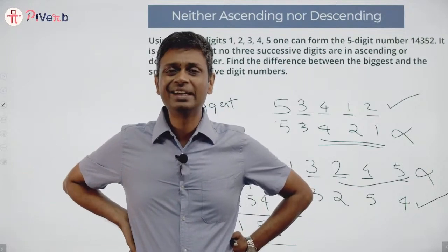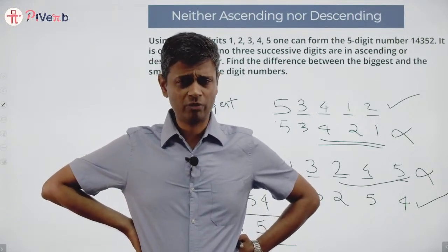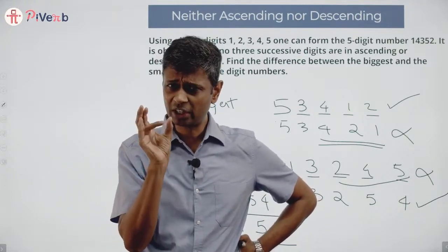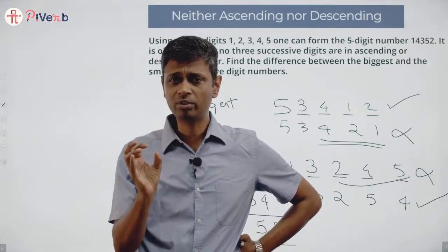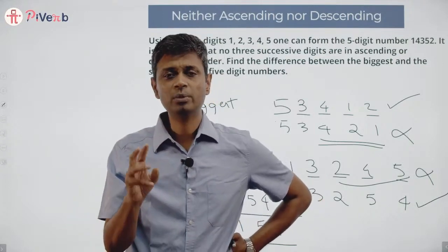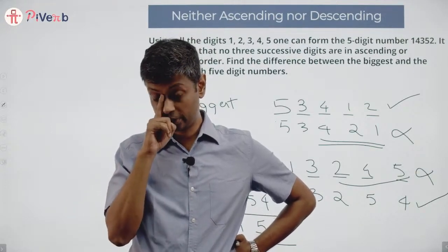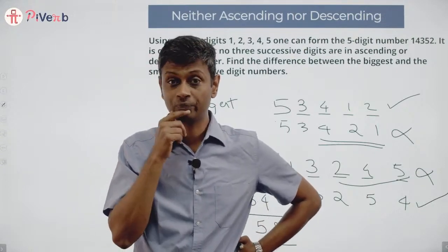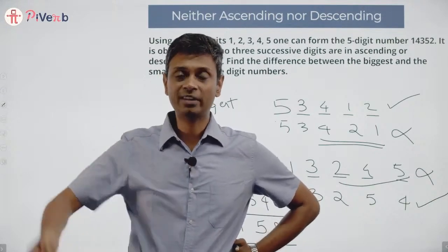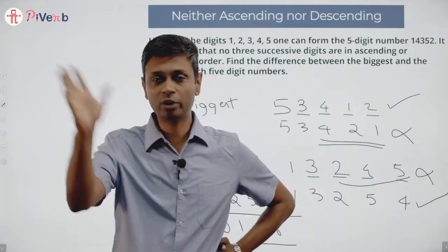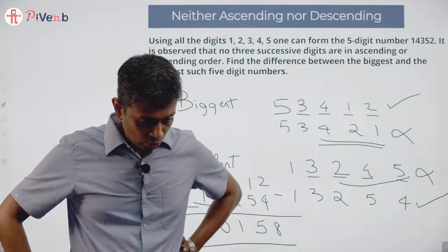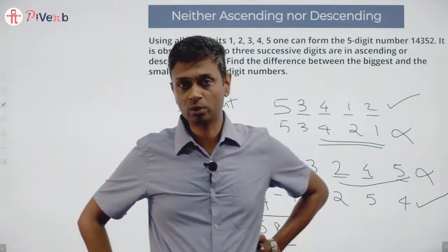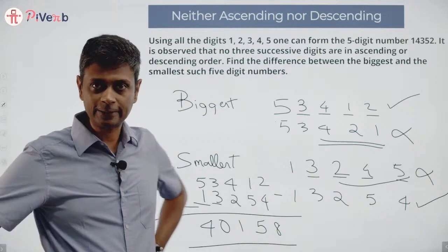The trickiest part is understanding the constraint: no three successive digits in ascending or descending order. Extract three successive digits and check. A good strategy is to write one number where the condition is satisfied and one where it isn't, to clearly understand what to avoid. Understand the question completely before solving. The two numbers are 53412 and 13254, and their difference is 40158.